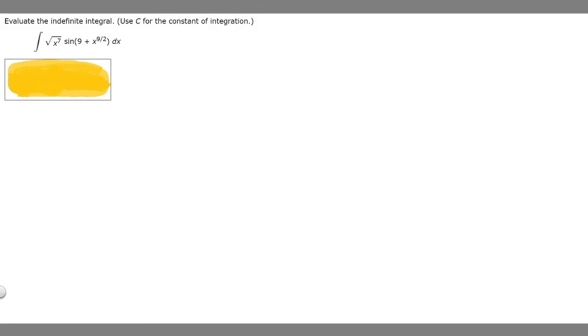So in this problem we're told to evaluate the indefinite integral, use C for the constant of integration, of the integral of the square root of x to the 7th times the sine of 9 plus x to the 9 over 2 dx.